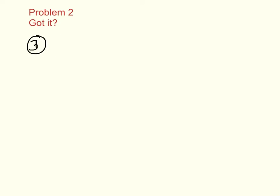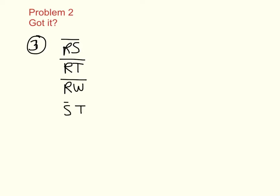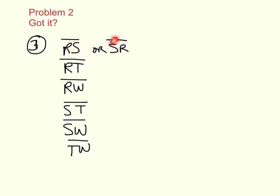Example 3: what are all the segments you can name in the figure? To name a segment we use two points. We could name segment RS, segment RT, segment RW, segment ST, segment SW, and segment TW — six segments total. Note that segment RS and segment SR are the same segment named different ways, not two separate segments. You could switch any of these letters to name the same segment.